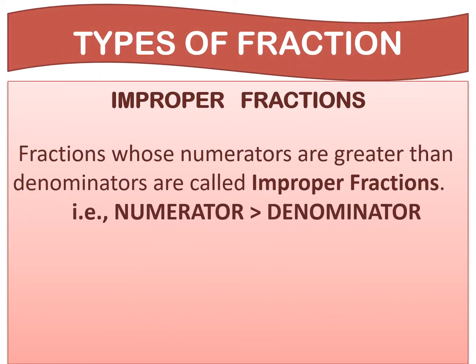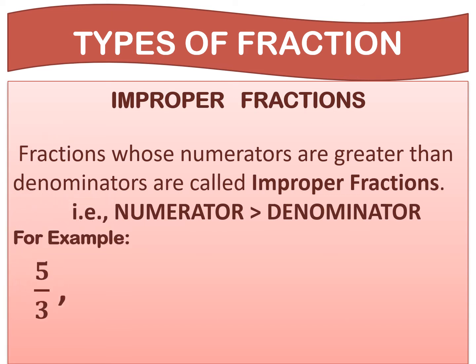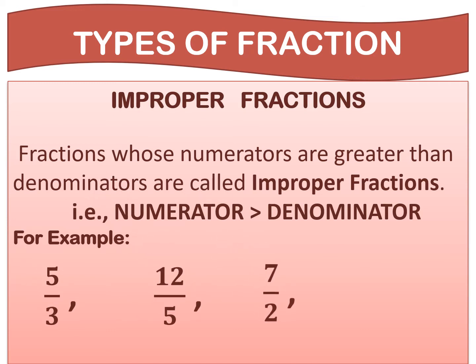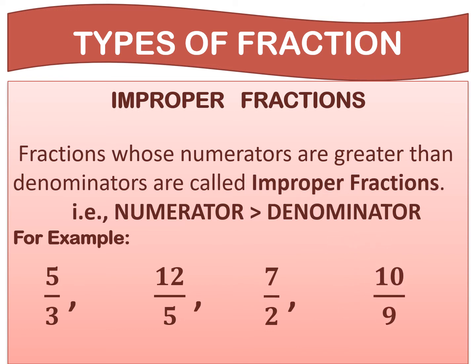The next is improper fractions. Fractions whose numerators are greater than denominators are called improper fractions. For example, 5 upon 3, 2 upon 5, 7 upon 2, and 10 upon 9. In each case, the numerators are greater than the denominators.